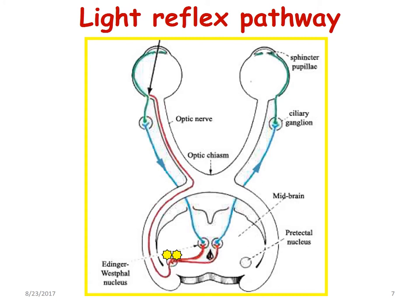And then from here, the efferent pathway will be passing through the oculomotor nerves to the ciliary ganglia. As you can see in this diagram, the short ciliary neurons carry the impulses to the sphincter pupillae and bring about constriction in the two eyes.